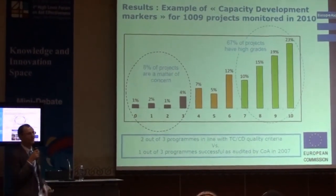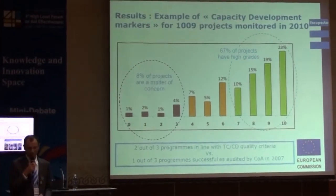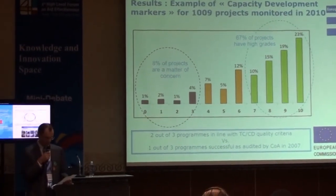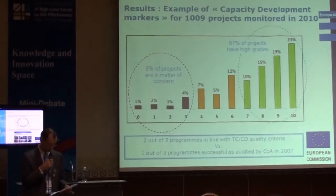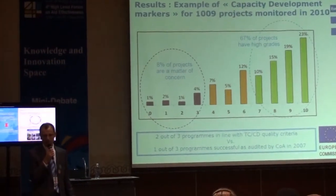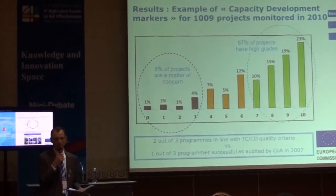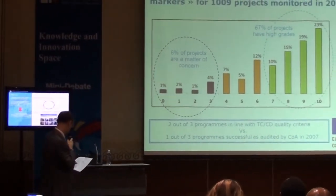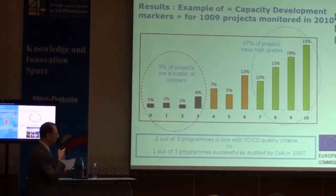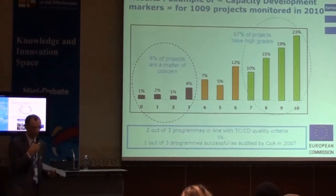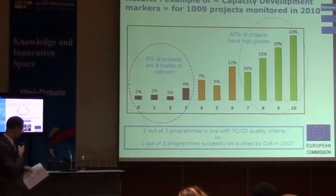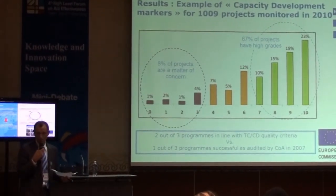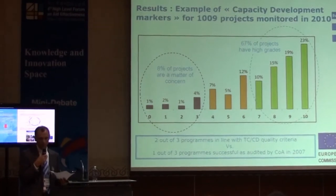It has taken longer than expected to see change, but there are some emerging results. For example, last year about 1,000 projects went through a process of external monitoring of five quality criteria, and they were rated. Projects with a score of 10 out of 10 are the most conducive to capacity development, and projects with zero, of course, the less conducive. The attitude of the partner country also plays a role because ownership and leadership are also rated.